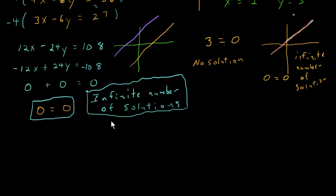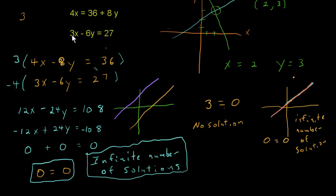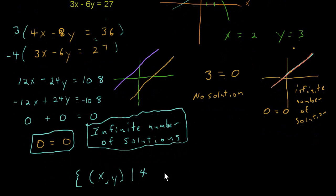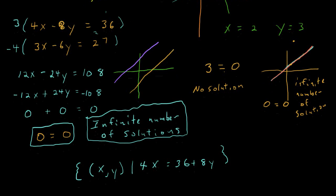One way that you can indicate your answer is by putting it in set notation. We'll just put the ordered pair x, y, then such that, and we don't want every single possible value for x and y, but it has to work for our equations. So we'll just write such that, and then what was our first equation? You can pick either one. 4x equals 36 plus 8y. That's one way to write the solution.